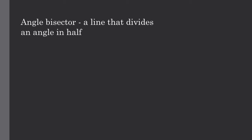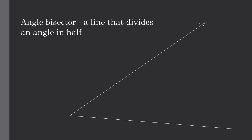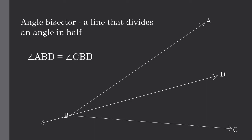The first definition we are going to go over is what an angle bisector is. An angle bisector is a line that divides an angle in half. So if we have angle ABC, the angle bisector will be the line that cuts the angle in half, meaning that angle ABD will equal angle CBD.